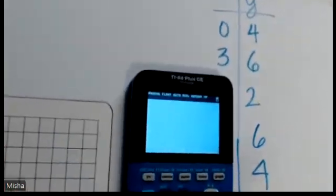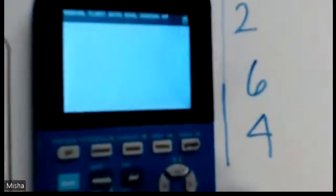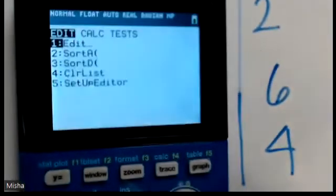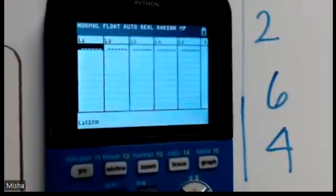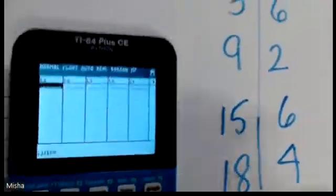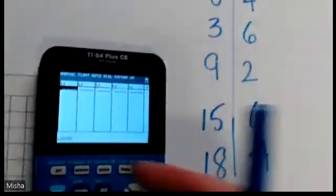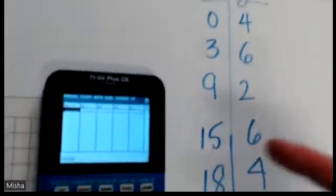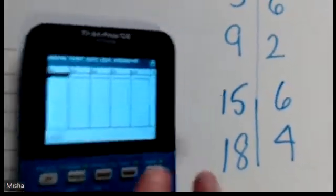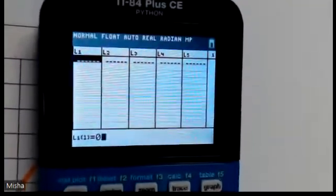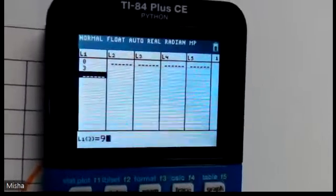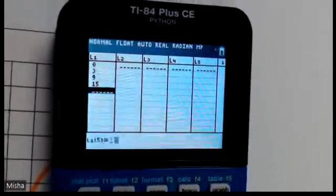So in a calculator, you go to stat mode. There we go, stat mode, hit enter. So in the L1 column, we're going to put all the x values, and in L2 we put the y values. So when we enter these: 0, 3, 1, 2, 15, 18.